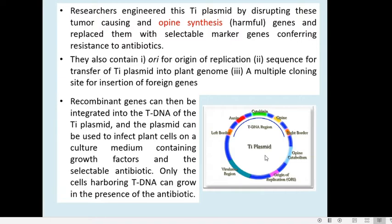The engineered Ti plasmid also contains sequences for transfer into the plant genome and multiple cloning sites for insertion of the foreign gene. There should be restriction enzyme cutting sites so we can incorporate the foreign DNA. Any vector is first cut, then the foreign DNA is ligated to it, and then it is transferred to the host cell. There will also be an origin of replication (ORI) so that it can replicate on its own.